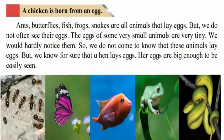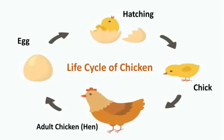We must have seen the eggs of the hen because they are big enough for us to see them easily, and many of you eat hen eggs too. Now see the next picture — the life cycle of the chicken. Can you see the adult mother hen? The adult chicken is called a hen. Next you can see an egg, and after a few days a chick comes out. After coming out, the chick grows day by day. This is the life cycle of the chicken.